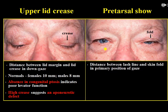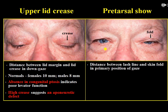There are two other important signs. First is the upper lid crease — the distance between the lid margin and the lid crease in down gaze. Normally it is 10 mm in females and 8 mm in males. Absence of the upper lid crease is a pure sign of congenital ptosis. A high upper lid crease suggests aponeurotic ptosis secondary to age, surgery, or trauma. The second sign is the pretarsal show — the distance between the lash line and the skin fold in the primary position of gaze.